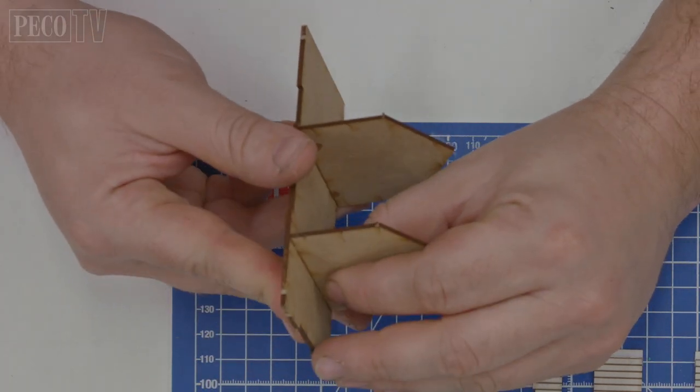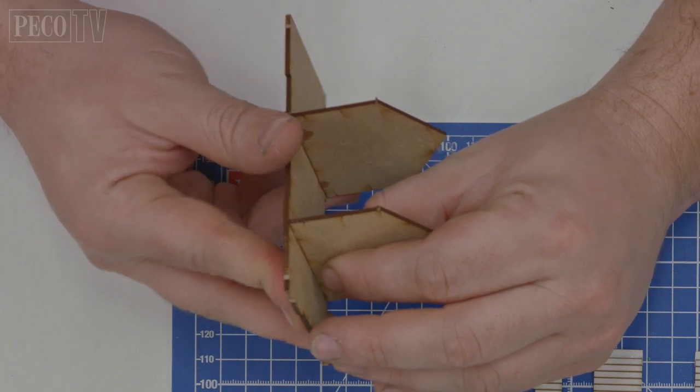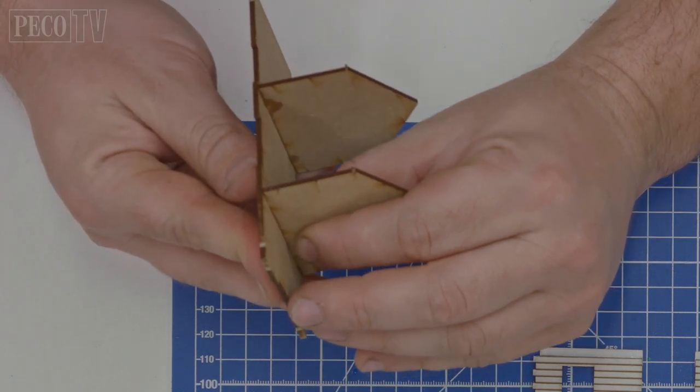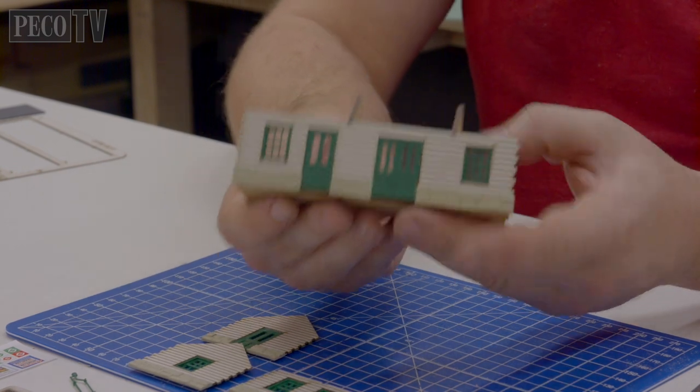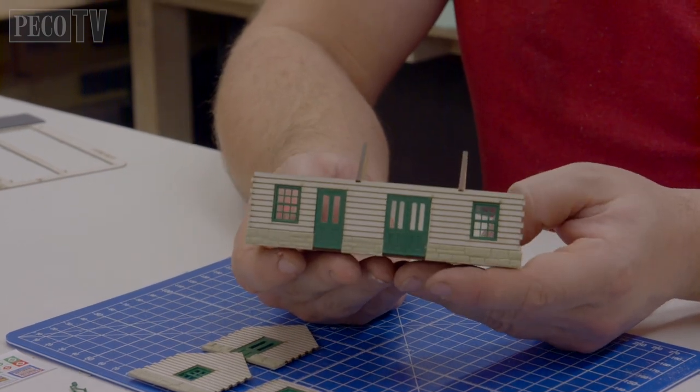Now you want to super glue the two internal walls of your building to the MDF base. Once set you can then start bringing all the walls of your buildings together.